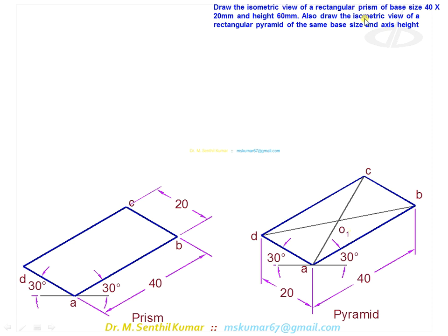Before that we will see the isometric view of the pyramid. First of all, mark the base point. This is the starting point of the axis for the pyramid. By drawing two diagonal lines you can get O1. That is where the axis point meets.